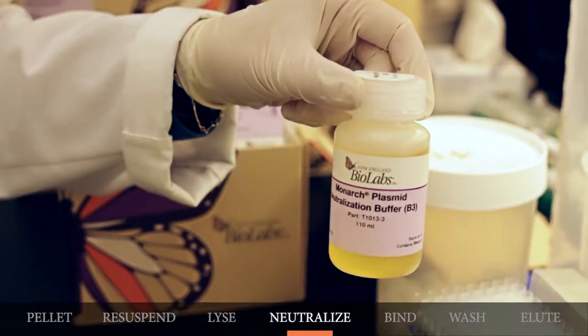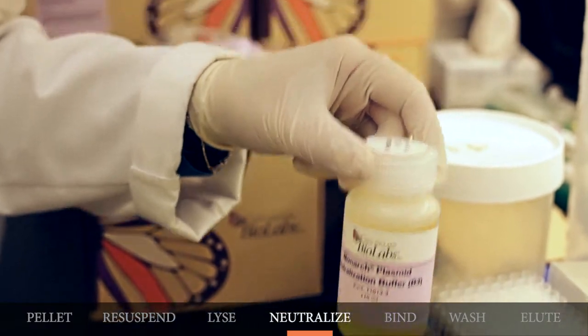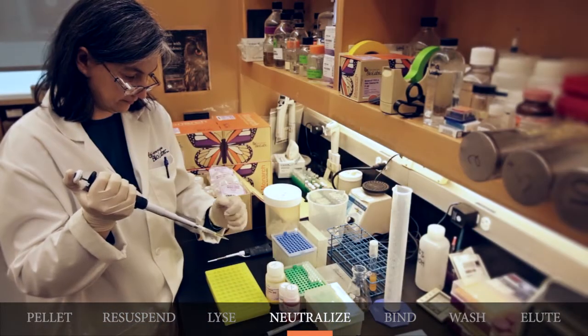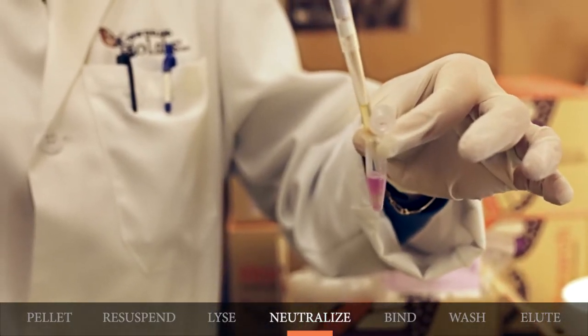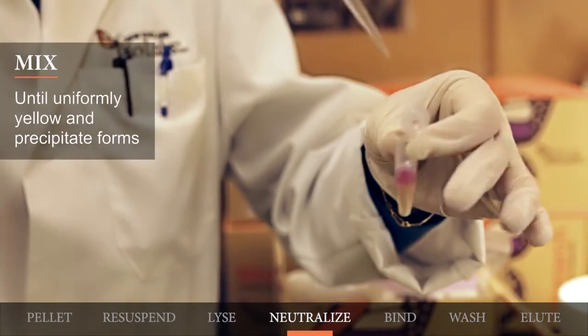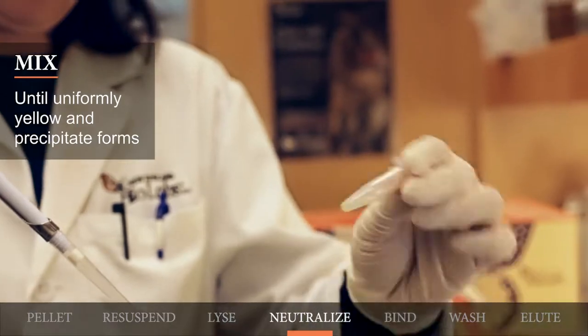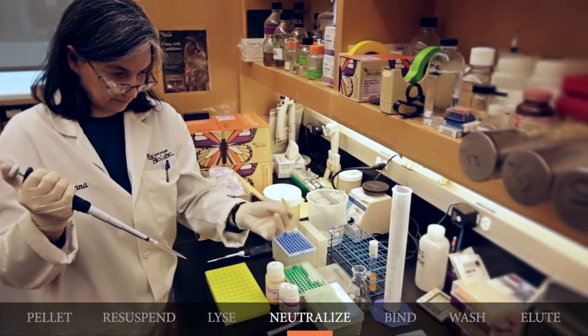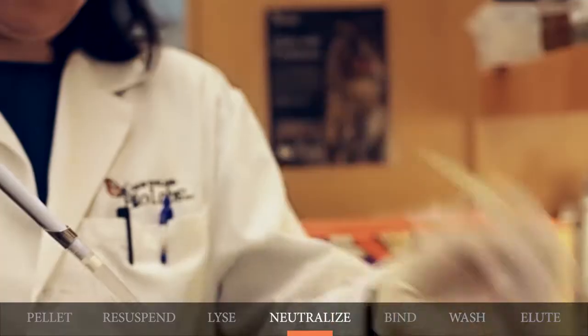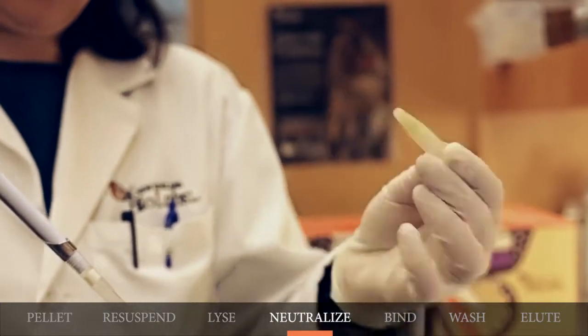To neutralize the lysate, add 400 microliters of the Plasmid Neutralization Buffer B3. Again, gently invert the tube five to six times until the color is uniformly yellow and you see a precipitate form. It is very important that you mix the solution until the color is uniformly yellow. Please do not vortex the solution.